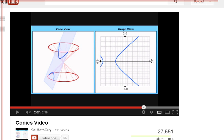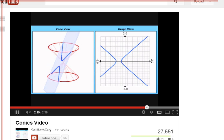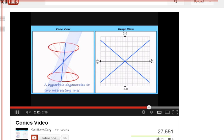The last degenerate case I'd like to look at is for the hyperbola. So let's take a look at what happens when we have a degenerate hyperbola. The slice comes together and it forms two intersecting lines.